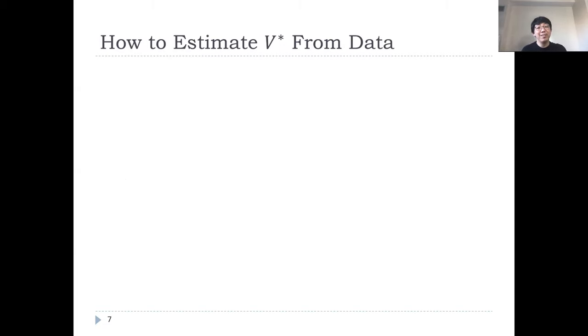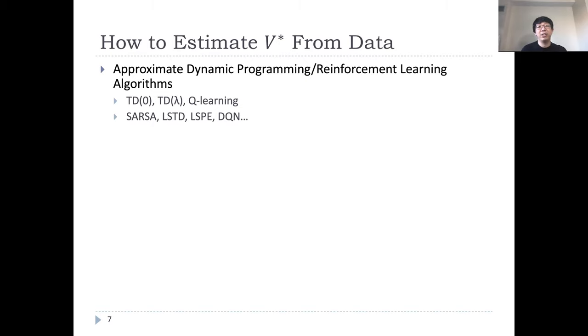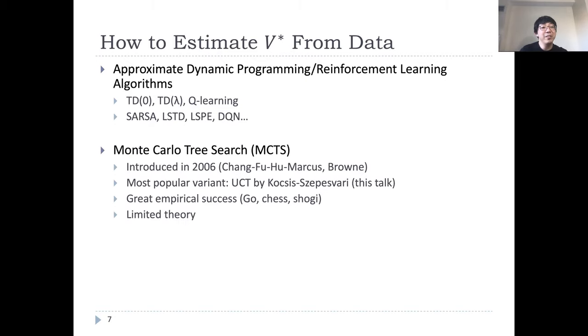So, how do we estimate V* from data? Well, there are several approaches. For example, there are a variety of RL algorithms developed, such as temporal difference style methods, Q-learning, and many more. When a simulator, or commonly referred as a generative model, is available, Monte Carlo Tree Search is an alternative method to estimate V* that relies on simulating many future trajectories.